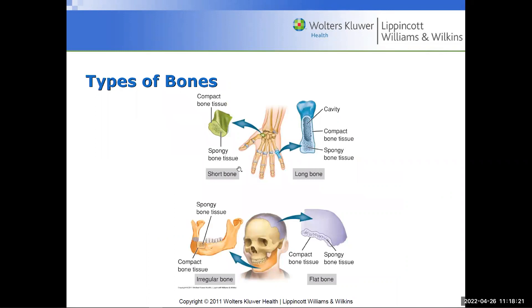Different types of bones: short bones and long bones. Why call a long bone a long bone and a short bone a short bone? Because long bones are long and short bones are short. In the hand, those small bones are the short bones. The long bones are in the leg — the femur in particular takes the most strain in the body and is the hardest bone.